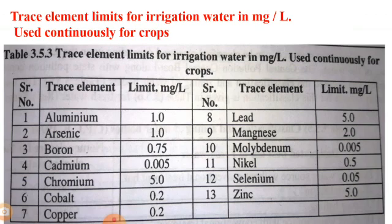Next is the trace elements limits for irrigation water in milligrams per litre used continuously for crops. A chart lists trace elements including aluminium, arsenic, boron, cadmium, chromium, cobalt, and copper, along with their permissible limits.